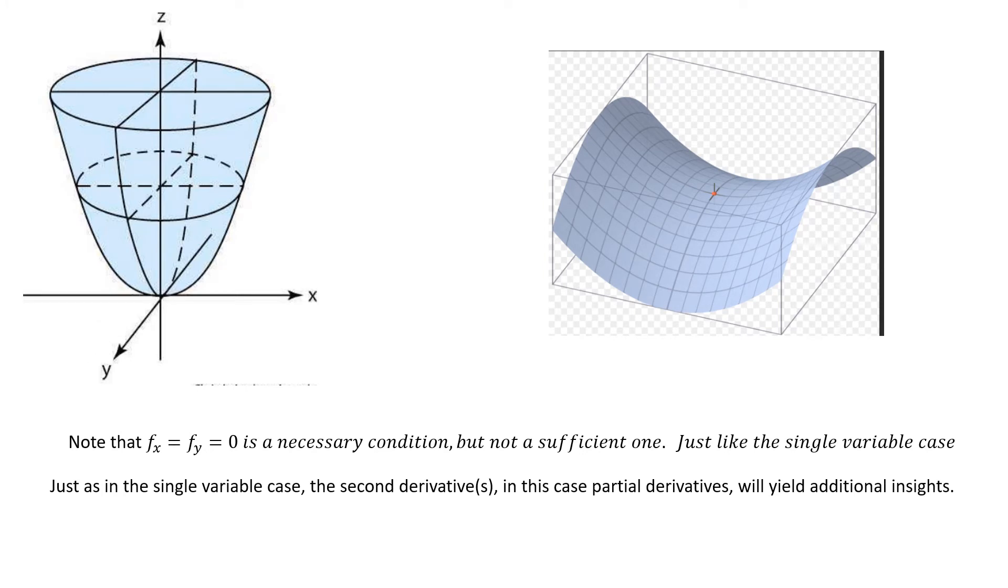But before we return to that problem, let's look at a situation where we're seeking a minimum. Here you have a paraboloid and the minimum happens down here. So, you can see that the partial derivative with respect to x and the partial derivative with respect to y are both 0. If I'm at a minimum, the partial with respect to x and the partial with respect to y are both 0.